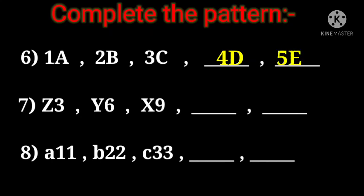Now come to question number 7. Z3, Y6, X9. So you can see it is a backward alphabetical order. And with that numbers are given 3, then 6, then 9. So what will be the next 2 numbers after 9? Yes, it is increasing with 3, 3. So the next 2 numbers will be 12 and 15. So the next 2 answers or patterns are W12 and V15.